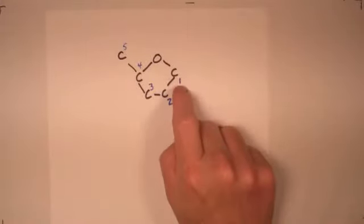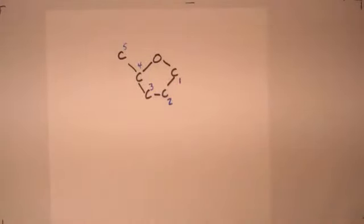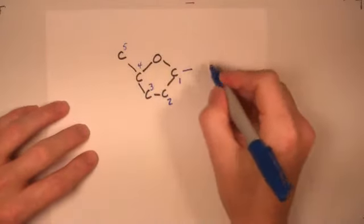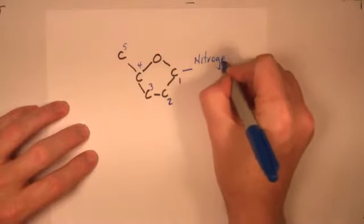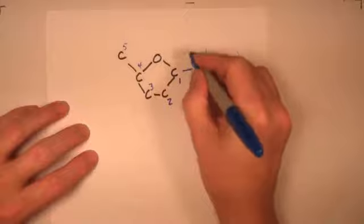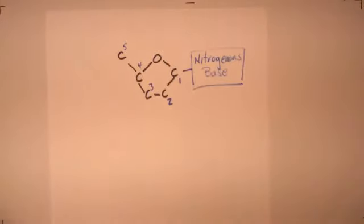So on carbon number one, we will always have, in a nucleotide, within the nucleotide, on carbon number one, you're always going to have that nitrogenous base. So if it's DNA, it's going to be guanine, adenine, thymine, cytosine. It's going to be one of those.